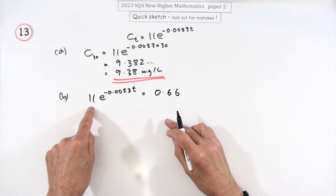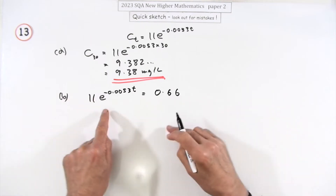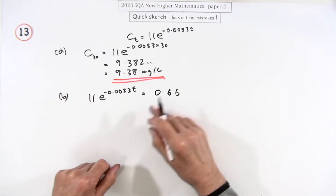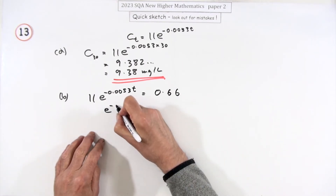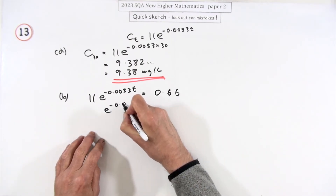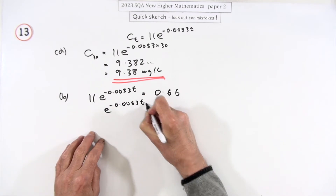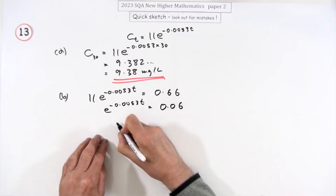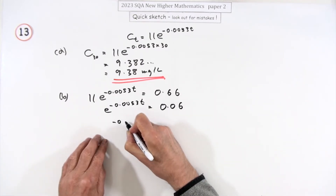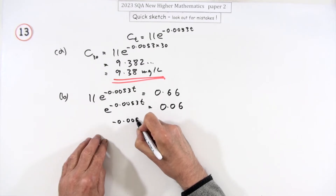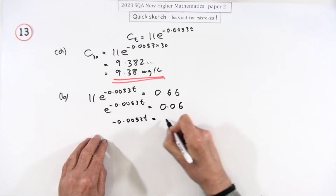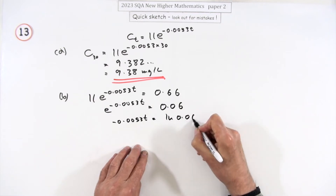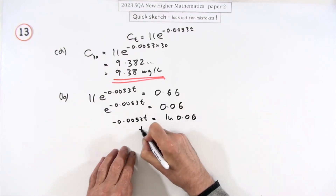Get rid of the three parts step by step: divide both sides by 11, so e to the negative 0.0053t equals 0.66 over 11. Then take the inverse of the exponential — that's the natural logarithm, logarithm base e — of both sides.